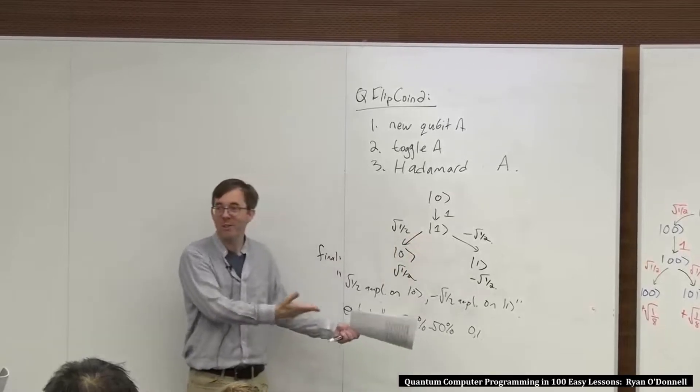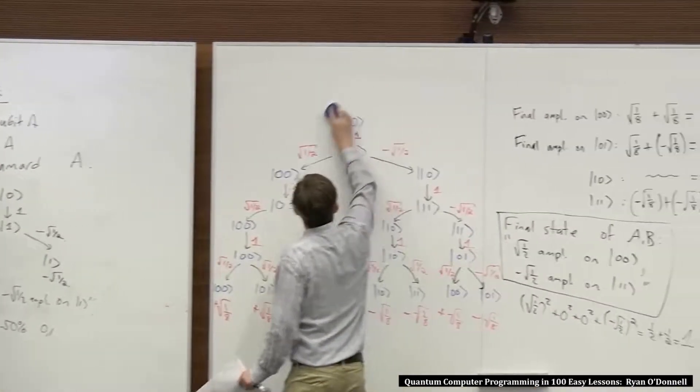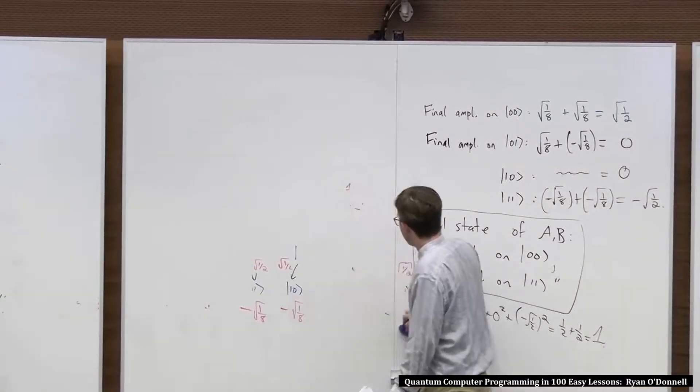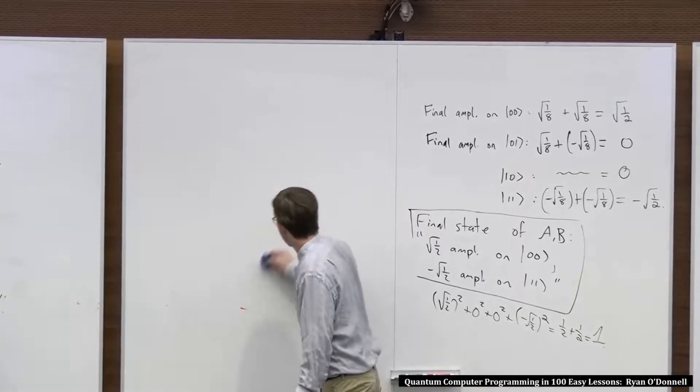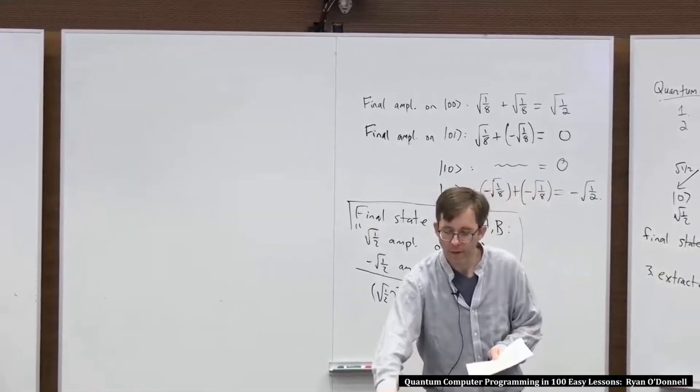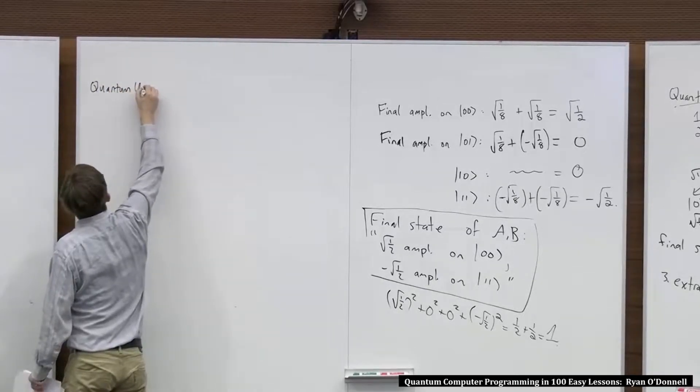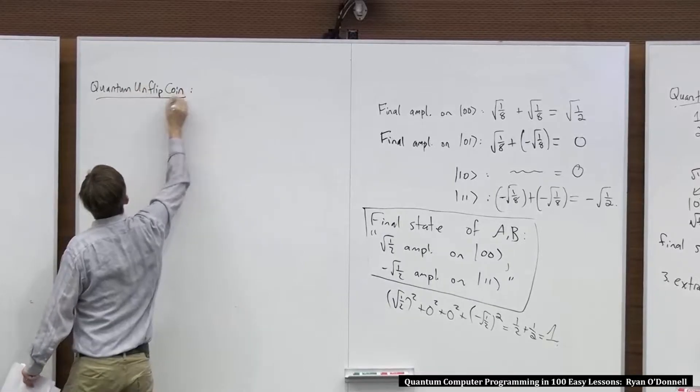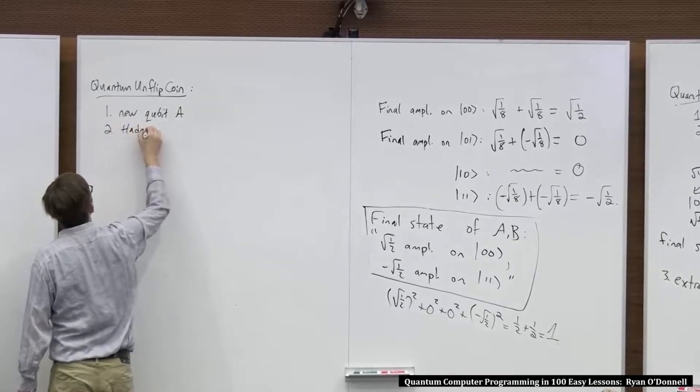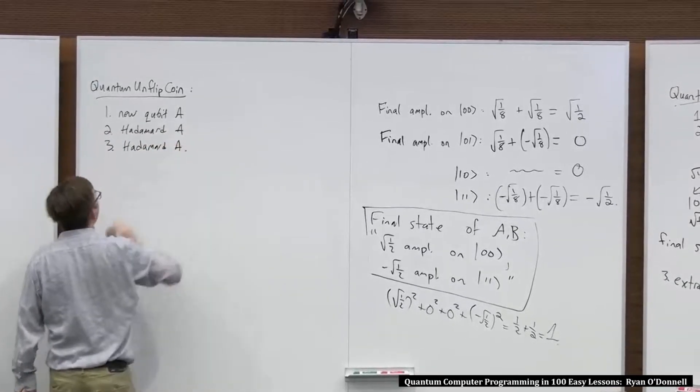But now I'll show you some more examples that you can physically do which would refute the hypothesis that that's how Hadamard works. Now let me show you some more code that you can do that would kind of reveal that it's not just the case that Hadamard wipes out your qubit and replaces it with a random bit. I'll call this quantum unflip coin. Here's the code, new qubit A, Hadamard A, so far it looks like quantum flip coin. Next instruction, Hadamard A again. And that's it.